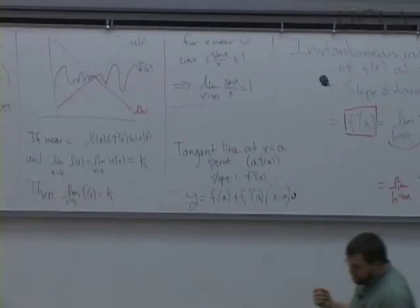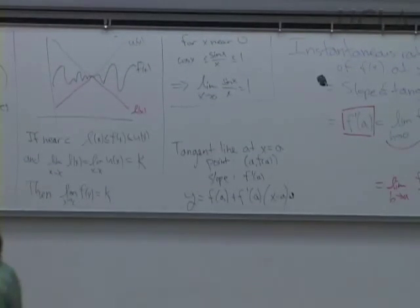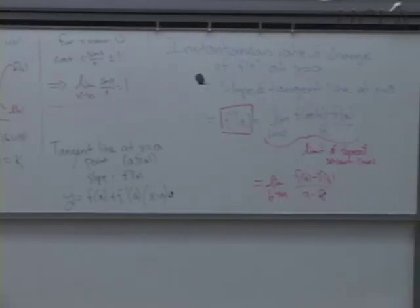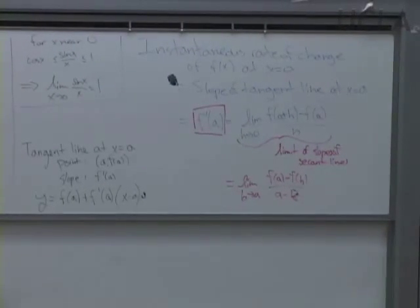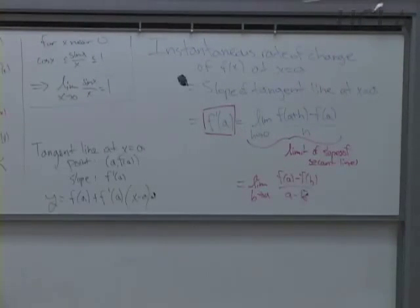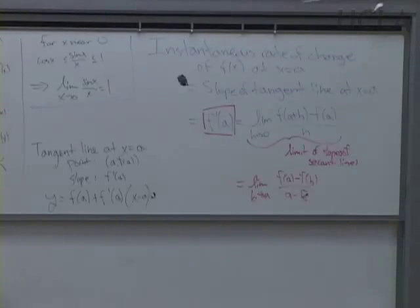We talked about manipulating limits which approach 0 over 0, and this is really important, because what we're going to deal with are limits which go to 0 over 0. Our goal when you have 0 over 0 is that something is causing it to go to 0, and hopefully it's the same thing happening on the top and the bottom. If we could cancel that out, then we don't have that 0 over 0 problem anymore. So our goal is to somehow cancel zeros.